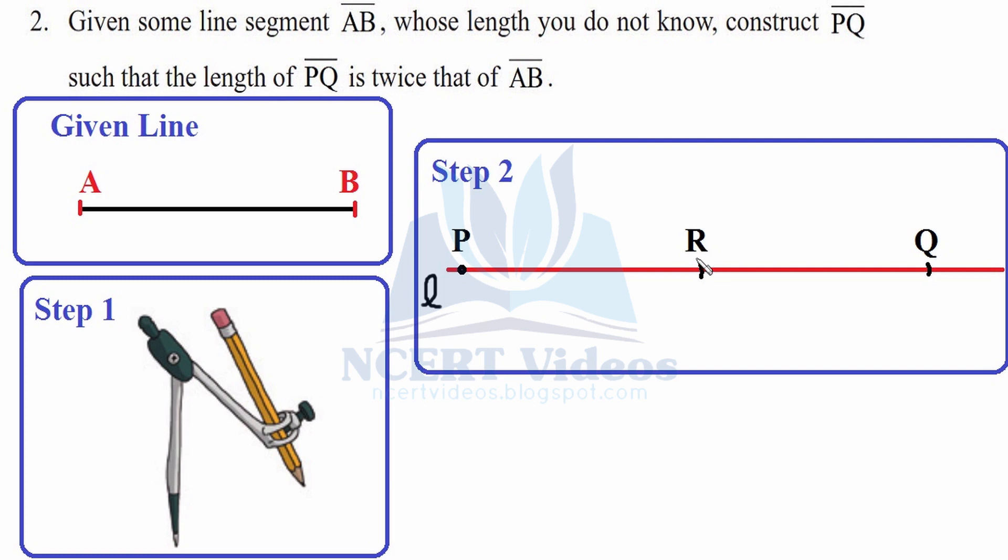Again, since we need to have twice that of AB, we will do it again. Now the needle will be at R and an arc will be made at point Q. Now we get twice of that of AB because we did this step two times. So we got this PQ twice the length of AB.